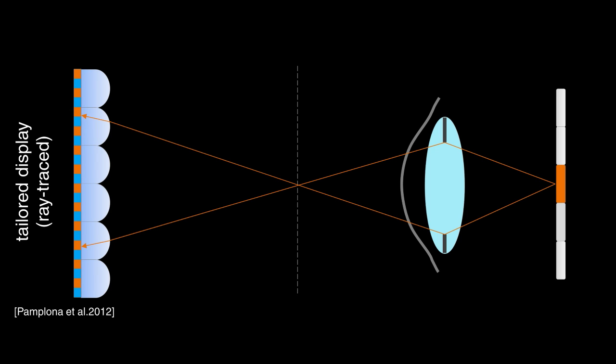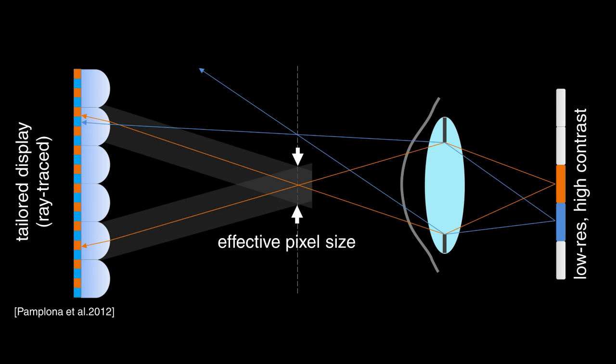Pamplona et al. uses a light field display so that each ray is mapped to exactly one view. Due to the number of views required, the received pixel is large and the resolution is low.